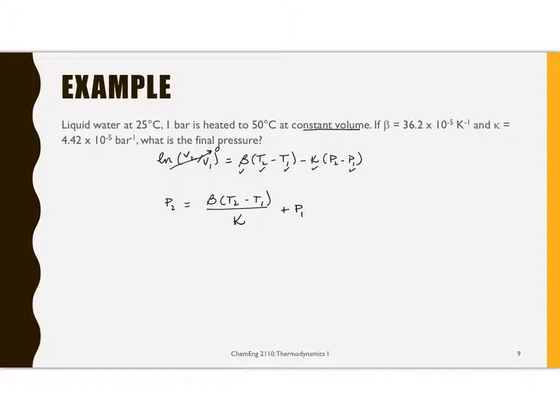And so if we substitute in our values, beta is 36.2 times 10 to the minus 5th per K, and kappa is 4.42 times 10 to the minus 5th per bar. The delta T is 25 degrees C, which is also 25 Kelvin. So those units cancel, the times 10 to the minus 5ths cancel. And adding the one bar, we end up with P2 equals 3.05 bar.